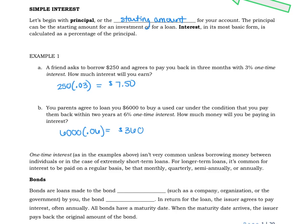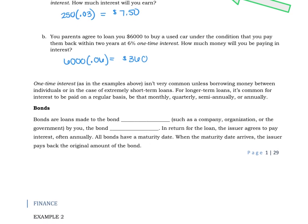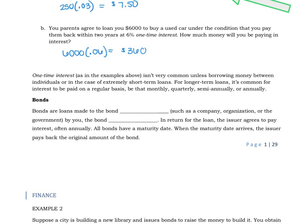By the way, if your parents will do that for you, take them up on that offer—way cheaper than what a bank will charge you. So that whole idea of one-time interest isn't very common unless it's borrowing money between individuals, you and your parents, you and a friend, or if it's a really short-term loan. If you're gonna use one-time interest, make sure those words appear in the problem that you're working.